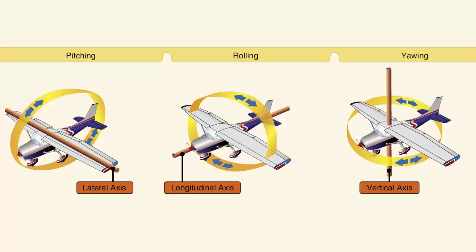All control movements cause the aircraft to move around one or more of these axes, allowing for the control of the airplane in flight in all three dimensions.